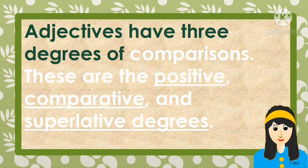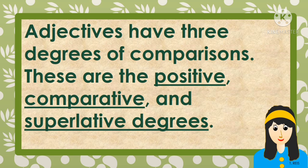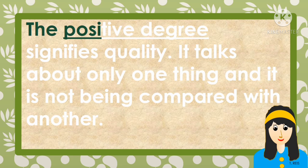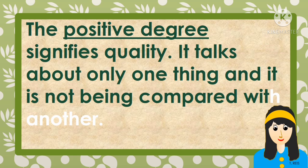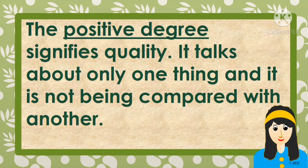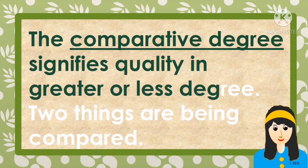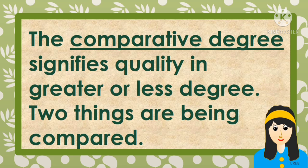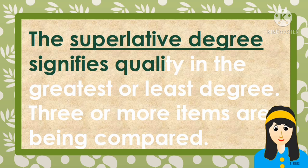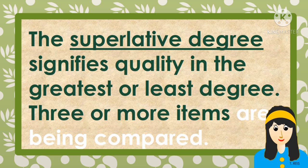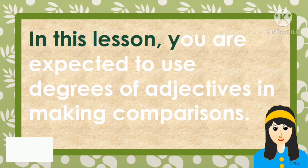Adjectives have three degrees of comparison: positive, comparative, and superlative degrees. The positive degree signifies quality — it talks about only one thing and is not being compared with another. The comparative degree signifies quality comparing two items, while the superlative degree signifies the greatest or least degree when three or more items are being compared.